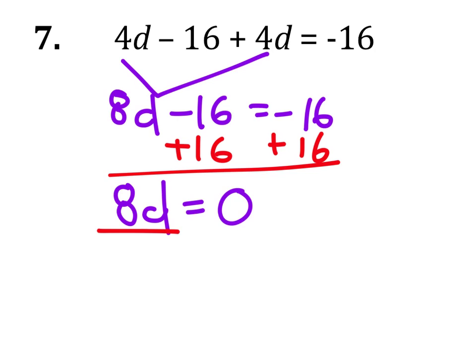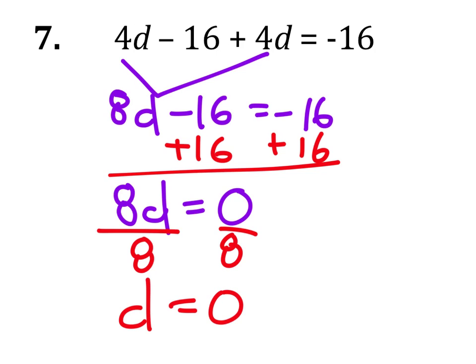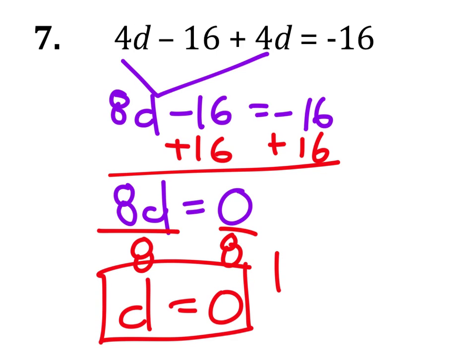Then dividing both sides by 8 — you can do this in the calculator — 0 divided by 8, D equals 0. And we found that there was one solution.